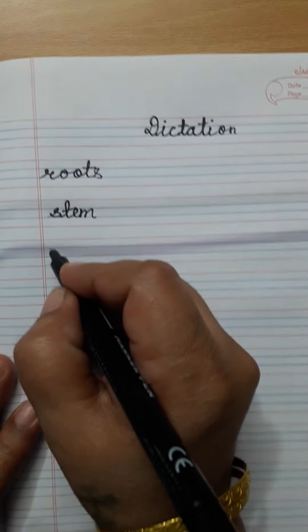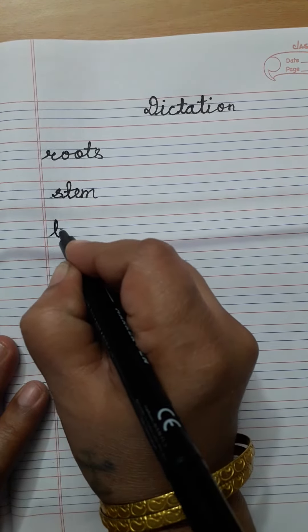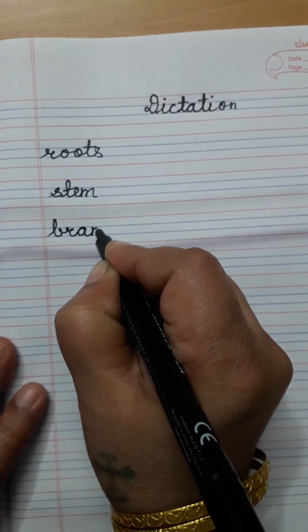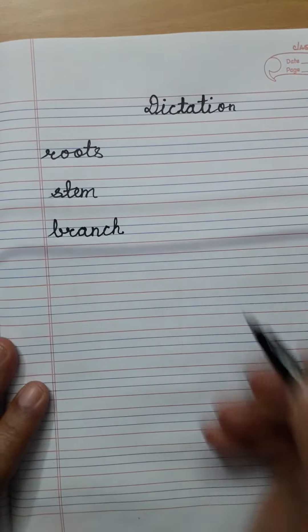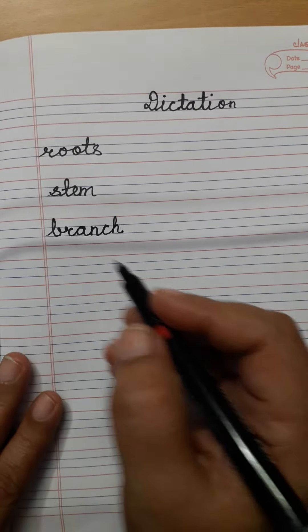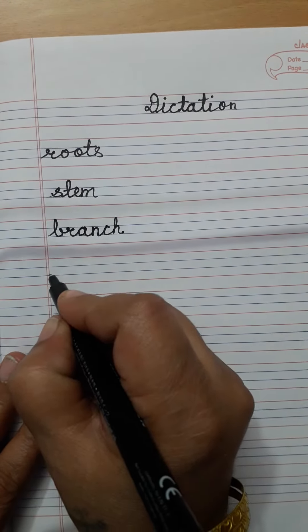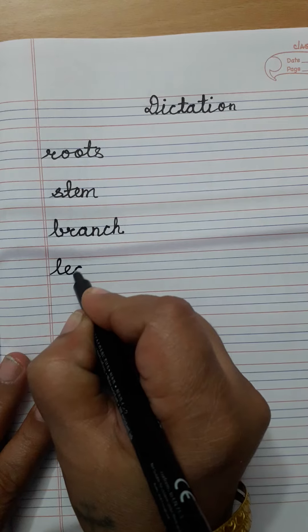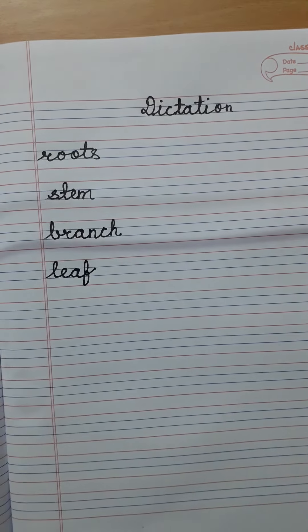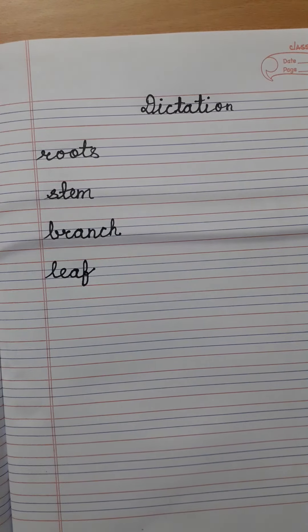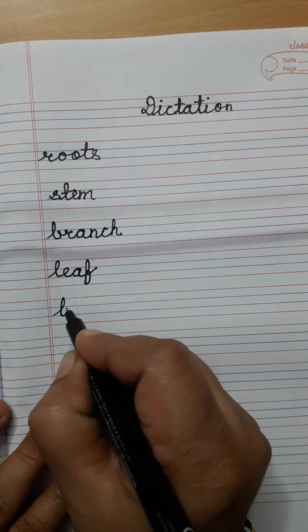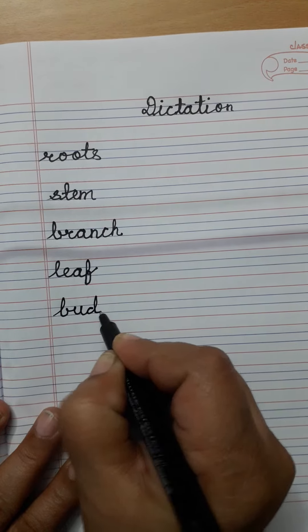Branch. B-R-A-N-C-H. Branch. Leaf. L-E-A-F. Leaf. Bud. B-U-D. Bud.